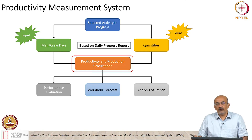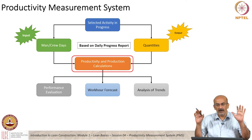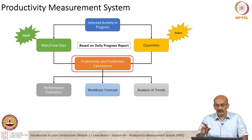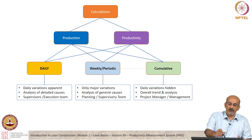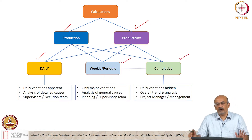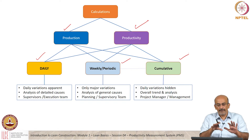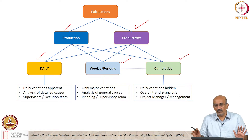We are going to productivity and production calculations based on two inputs: labor hours and quantities. When we go into these calculations, we have a lot of options. These calculations can show, as we discussed in the last class, production and productivity, and this can be done on a daily, weekly, periodic, or cumulative basis. In this section, we will discuss how these calculations are converted into daily, weekly, and cumulative reports and what these reports mean.